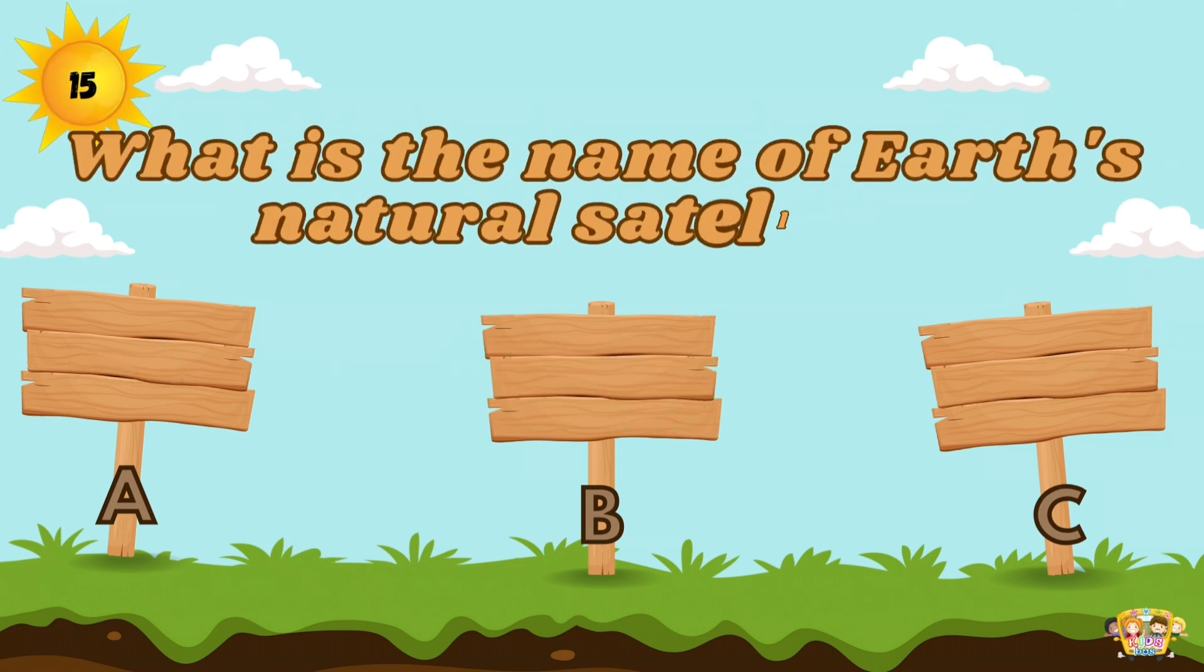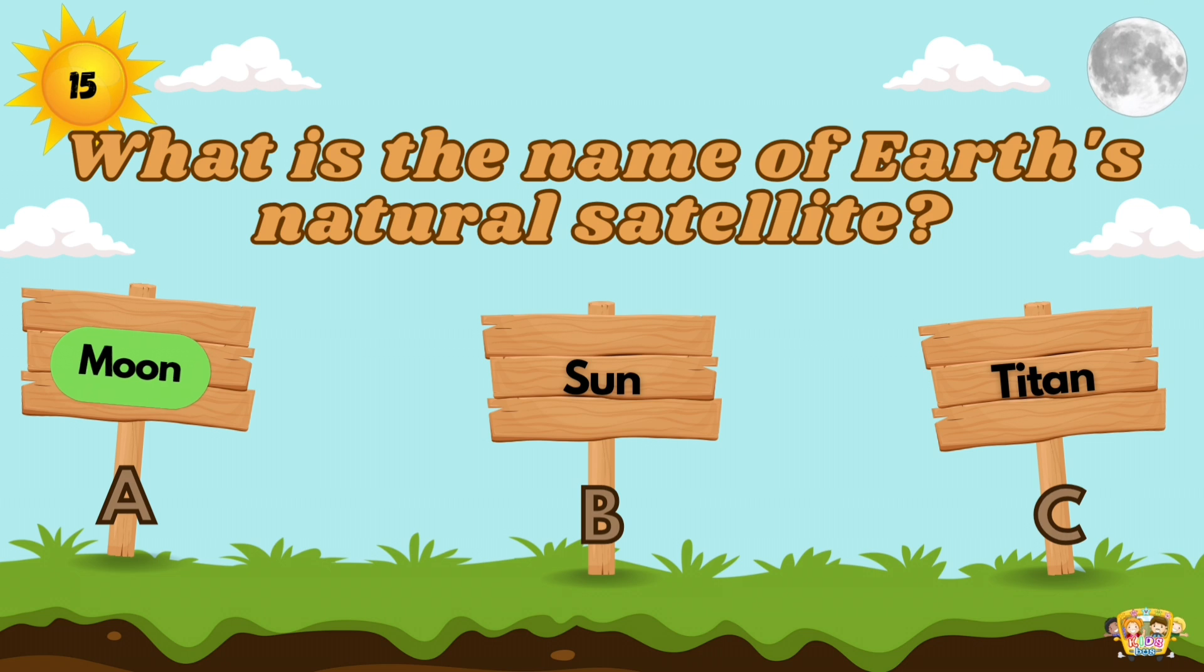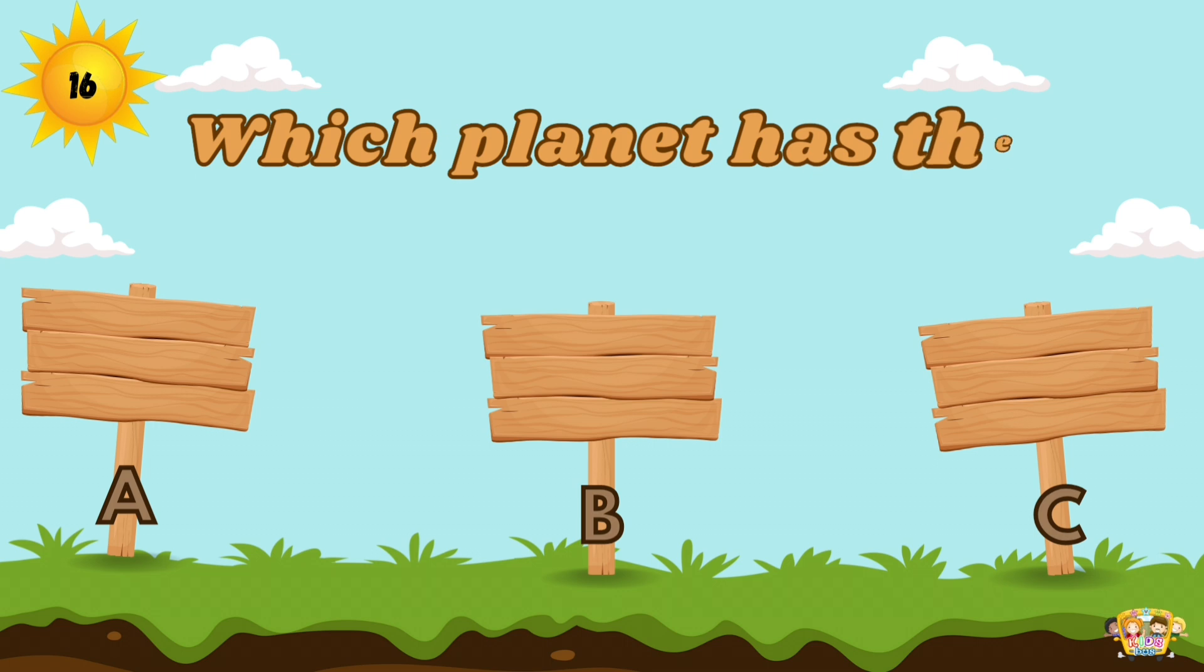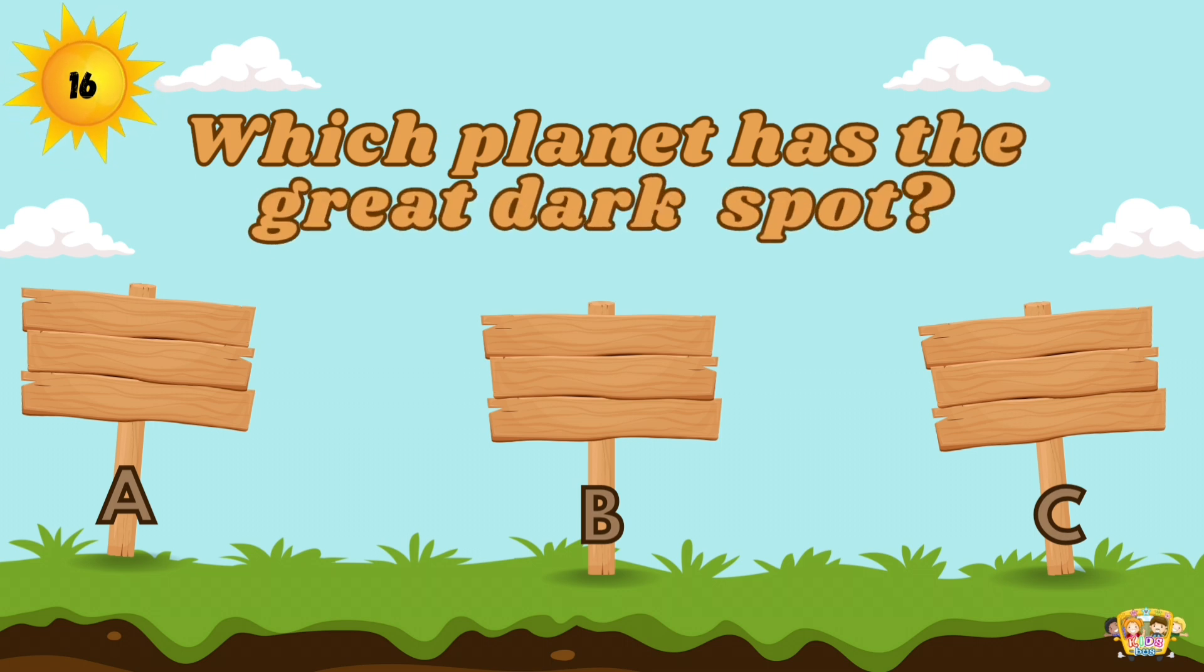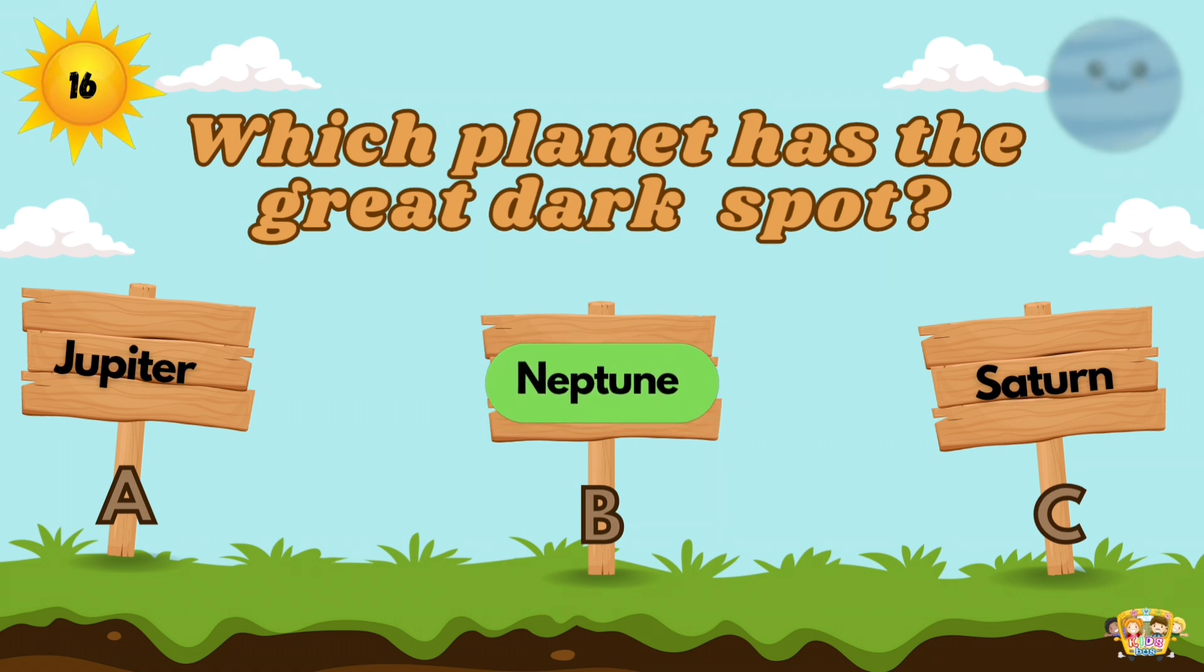What is the name of the Earth's natural satellite? Moon is the natural satellite of the Earth. Which planet has the Great Dark Spot? The Great Dark Spot was a huge spinning storm in the southern atmosphere of Neptune.